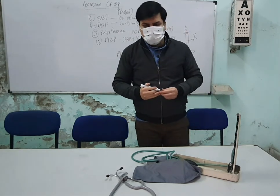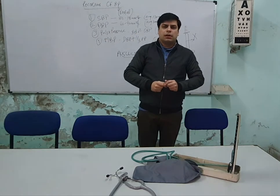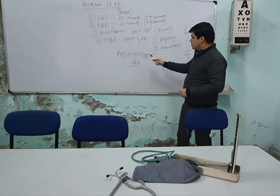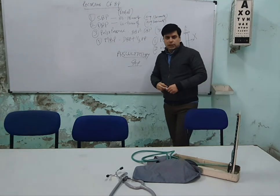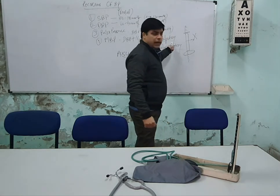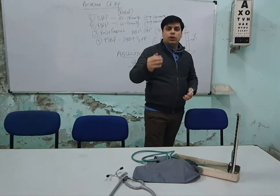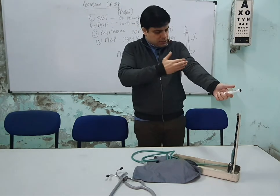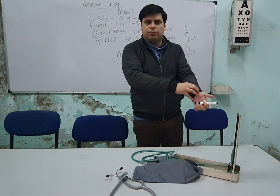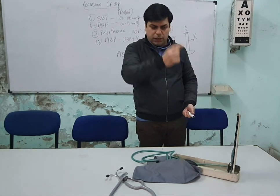The exact causes of the auscultatory gap are not perfectly known even today, though there are many assumptions. That is why both palpatory and auscultatory methods are necessary and equally important. A third disadvantage of the palpatory method is that it gives a systolic reading slightly lower than the actual value, because there is a time delay for blood to travel from the brachial artery to the radial artery, during which the mercury column is already falling.